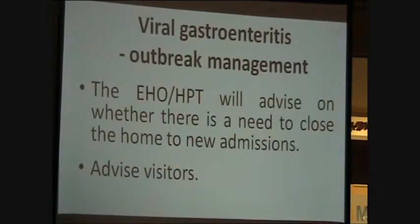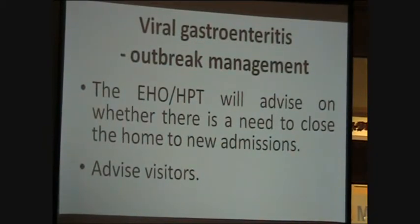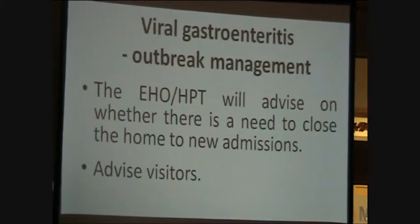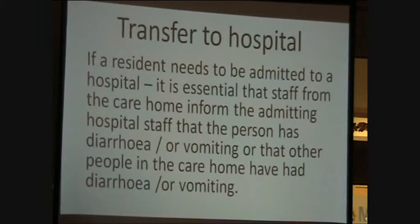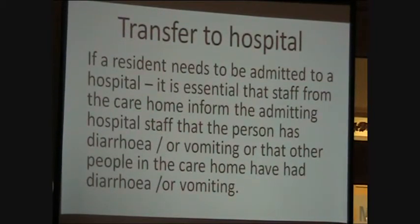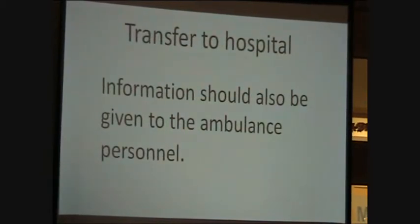The health protection team and the environmental health officers will advise on whether there is a need to close the home. They may advise that new admissions to the home should not occur whilst there is an outbreak of diarrhea and vomiting. In the event of the home being closed, a resident who has been admitted to hospital with diarrhea or vomiting may be readmitted to the home when they are fit for discharge. You should advise relatives if the home has been closed. High levels of cleaning with a chlorine releasing agent are required. If a resident needs to be admitted to hospital, you must inform the hospital staff and the ambulance staff that the resident currently has, or has previously had, diarrhea or vomiting, or that there are other residents in the home with diarrhea and vomiting.